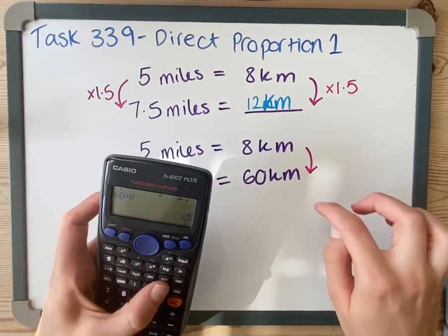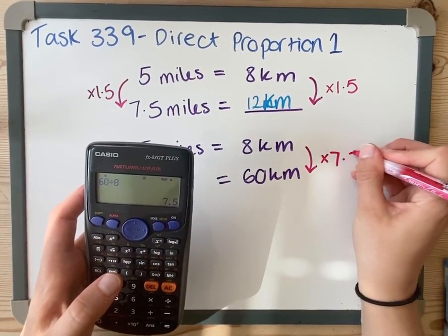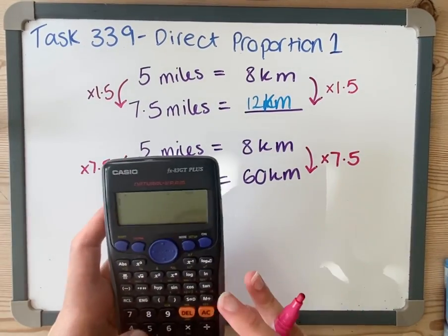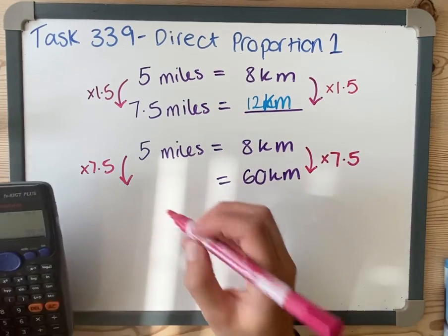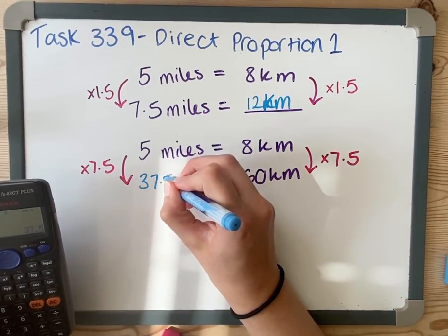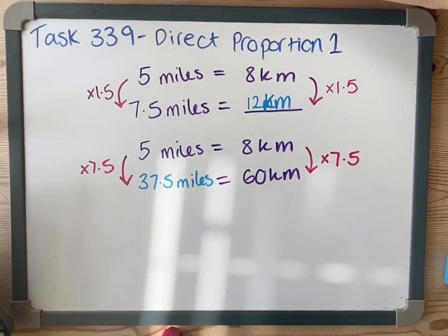If I do 60 divided by 8, I will get what that something is, and it's 7.5. So I'm going to times this by 7.5 as well, and 5 times 7.5 is 37.5 miles.